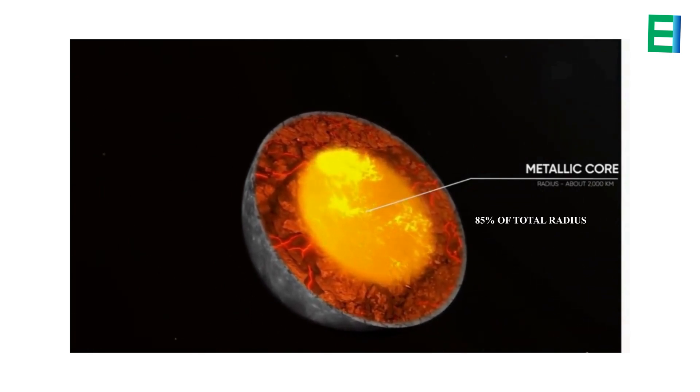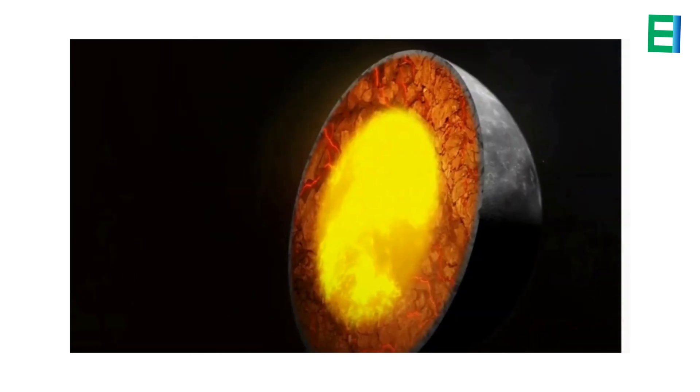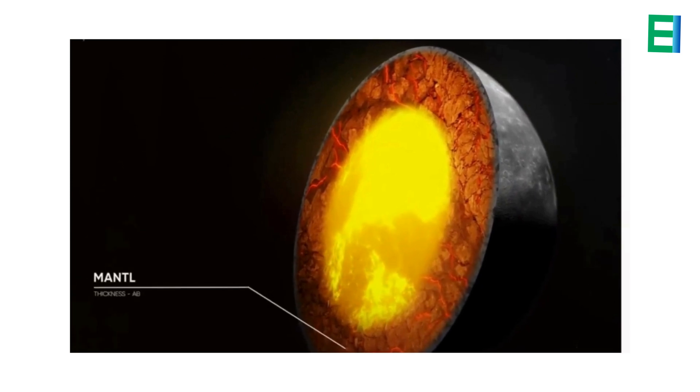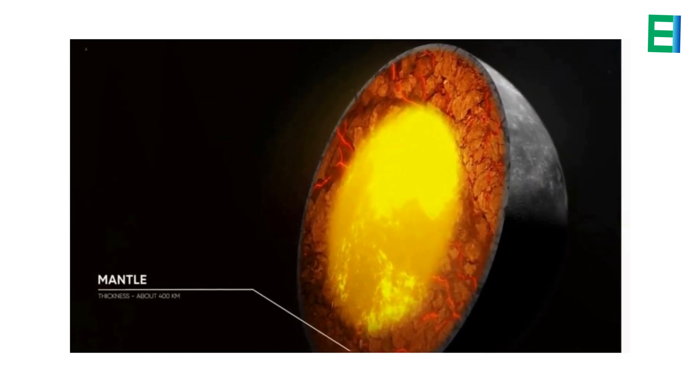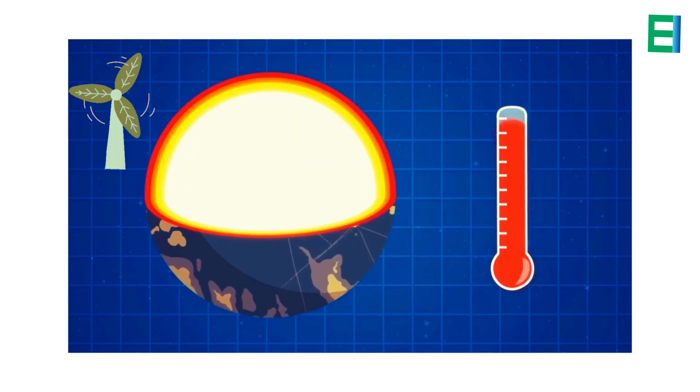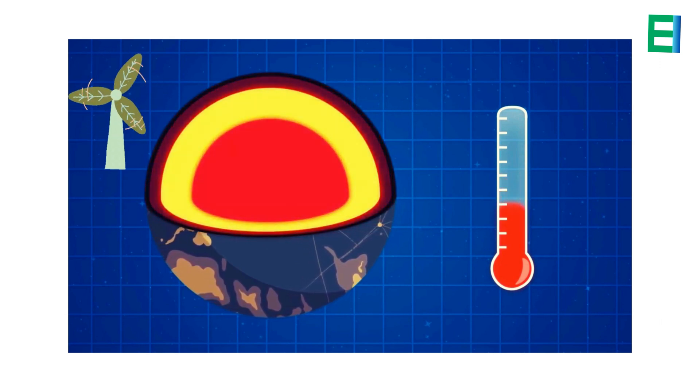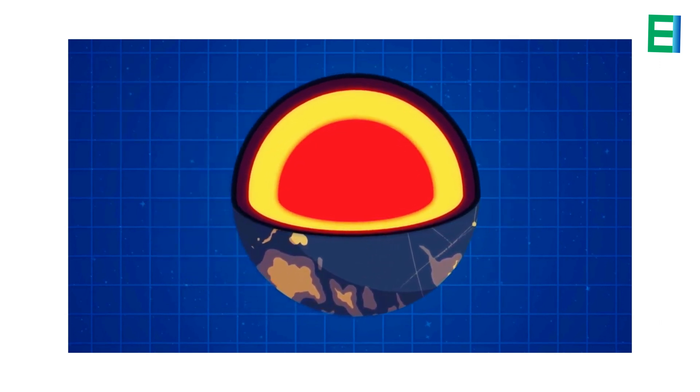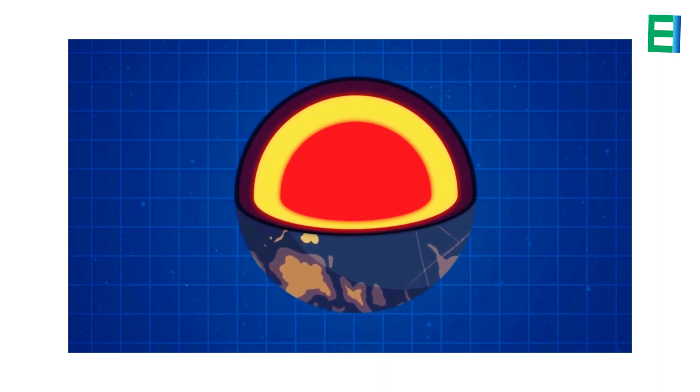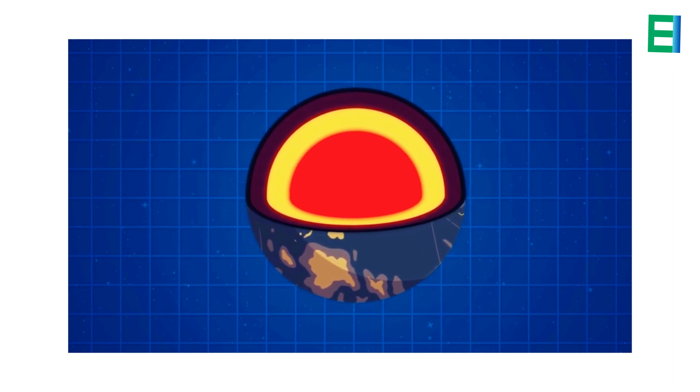Above the core, Mercury has a rocky mantle layer composed primarily of silicate minerals. The outermost layer is its crust, which is composed of different types of rocks. Over the course of approximately 4.5 billion years, the iron core has gradually cooled and contracted. As a result, the surface of Mercury has been drawn inward, leading to a reduction in the planet's size by an estimated four miles.